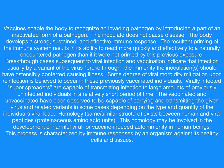Breakthrough cases subsequent to viral infection and vaccination indicate that infection, usually by a variant of the virus, broke through the immunity the inoculation should have ostensibly conferred, causing illness. Some degree of viral morbidity mitigation upon reinfection is believed to occur in previously vaccinated individuals. Virally infected superspreaders are capable of transmitting infection to large numbers of previously uninfected individuals in a relatively short period of time. The vaccinated and unvaccinated have been observed to be capable of carrying and transmitting the given virus and related variants, depending on the type and quantity of the individual's viral load.